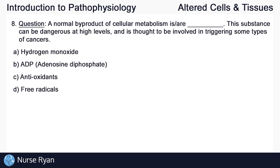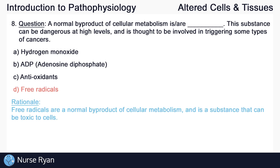For the last question, number 8: a normal byproduct of cellular metabolism is blank. This substance can be dangerous at high levels and is thought to be involved in triggering some types of cancers. The answer is D — free radicals. Free radicals are a normal byproduct of cellular metabolism and are a substance that can be toxic to the cells.